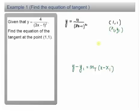We have to proceed to find our gradient for tangent, and gradient for tangent is given by dy over dx. So before we differentiate this expression, bring the power up, we have 4 times 3x minus 1 power negative 2.